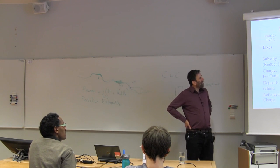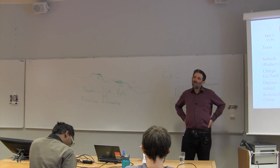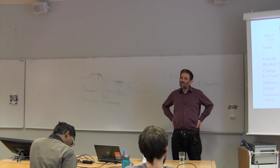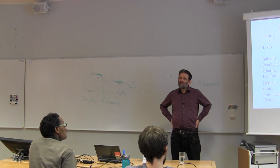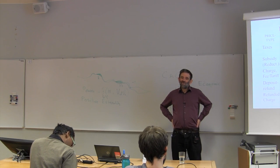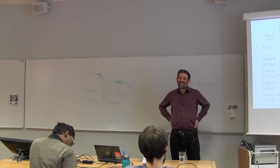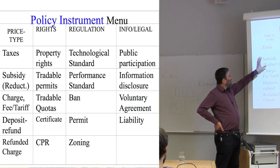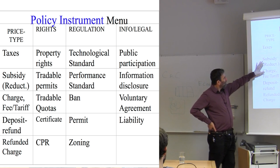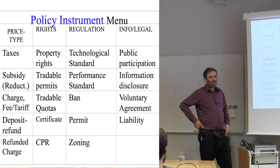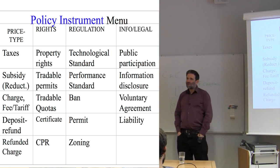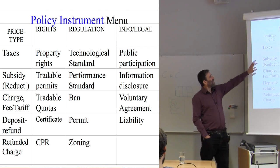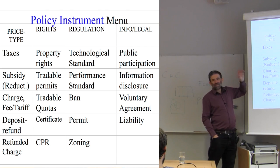So it's not easy to come up with really good categories of instruments. Having made that rather long and elaborate excuse, I'll go through this. The first column lists things where you affect the price directly, and the archetype here is the tax.